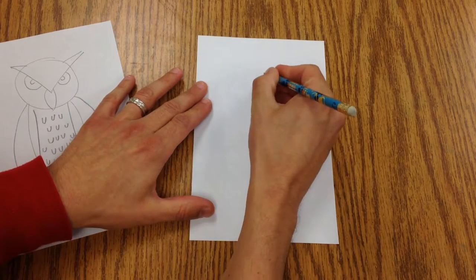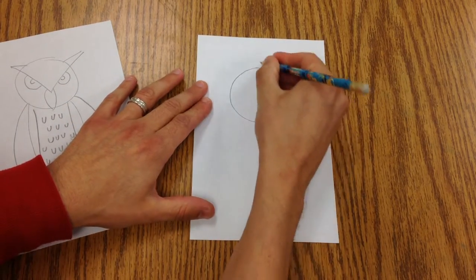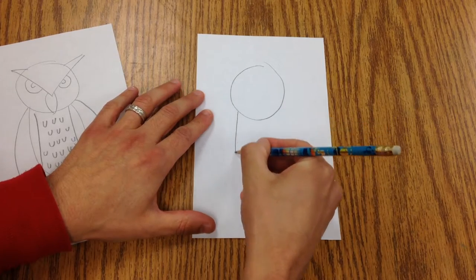So I'm going to draw a circle here and I'm going to draw a letter U for the body.